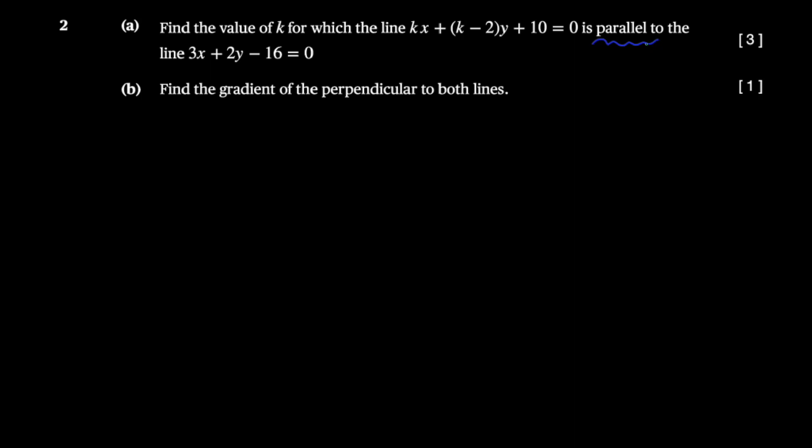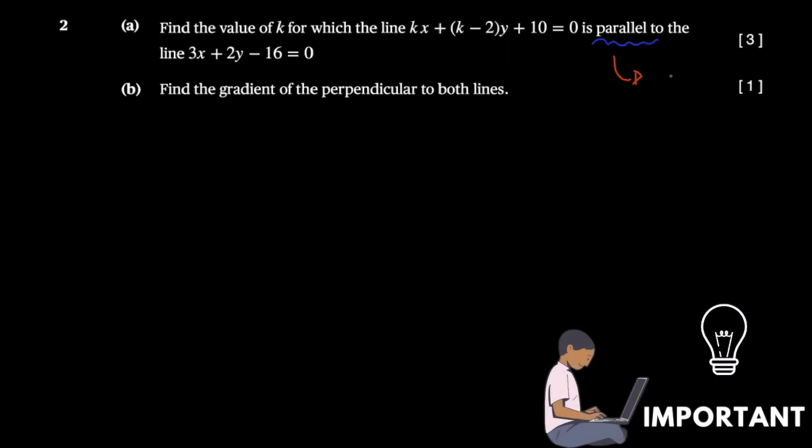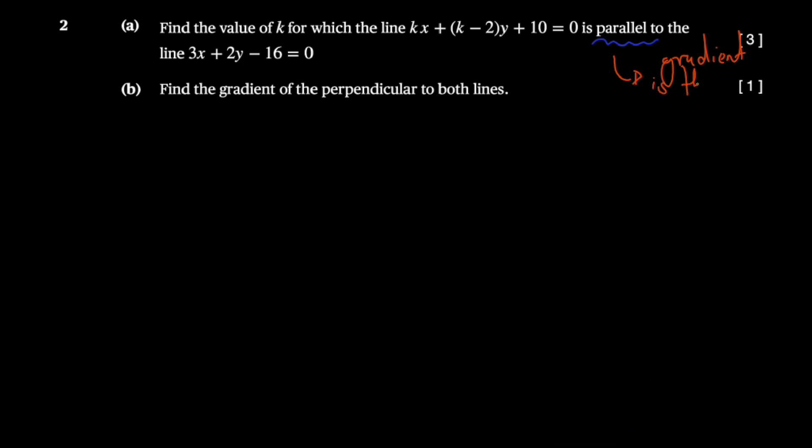So you want to find the value of k which satisfies that condition. The important part of this question is that these two lines are parallel. What we know about parallel lines is that the gradient is the same, so it's the same gradient for the two lines.